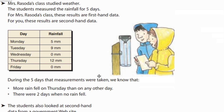During the five days that measurements were taken, we know that more rain fell on Thursday than any other day because the number for rainfall on Thursday was the highest, and there were two days when there was no rain.